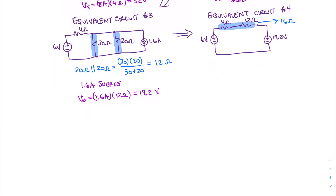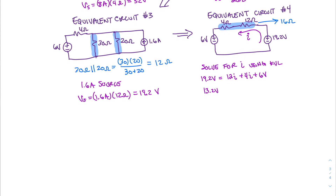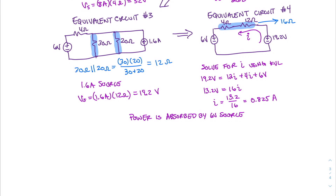Now all we have left to do is solve for the current in this circuit to find the power either absorbed or supplied by the 6-volt source. The 6-volt source is actually going to be absorbing power because the voltage on the right is higher than the voltage on the left. Establishing a counterclockwise current direction and using KVL: 19.2 volts equals 12 times I plus 4 times I plus 6 volts. Moving the 6 volts to the left side: 13.2 volts equals 16I. Solving for I gives 0.825 amps. Since current is going into the 6-volt source, it is being absorbed. Using P equals IV, the power equals 0.825 amps times 6 volts, which equals 4.95 watts.